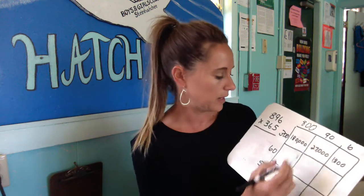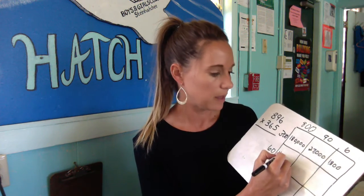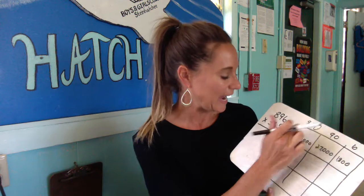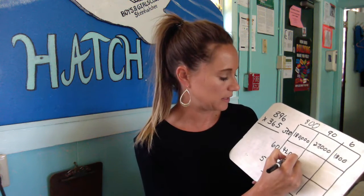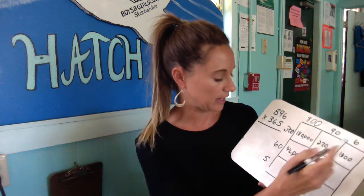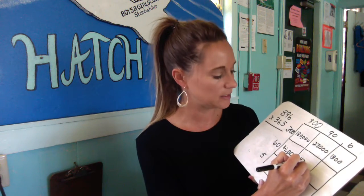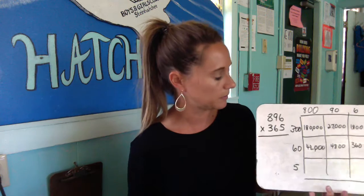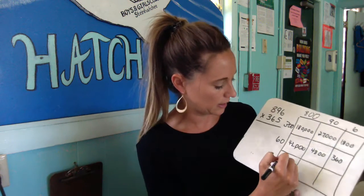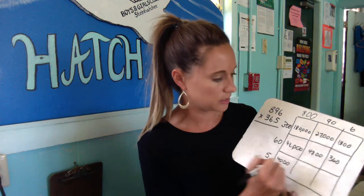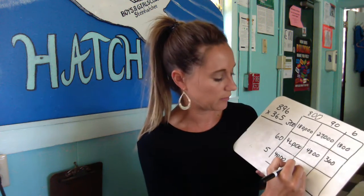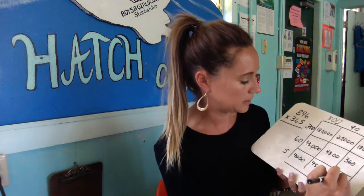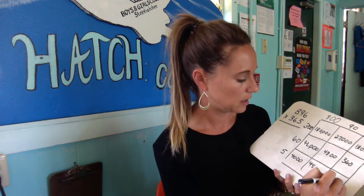For the sixty column — 8 times 6 is 48, and then add three zeros, wait — 8 hundred times 60: 8 times 6 is 48, add three zeros giving 48,000. Then 90 times 60: 9 times 6 is 54, add two zeros for 5,400. Then 6 times 60: 6 times 6 is 36, add a zero for 360. Then 800 times 5: 8 times 5 is 40, add two zeros for 4,000. Then 90 times 5: 9 times 5 is 45, add one zero for 450. And 6 times 5 is 30.